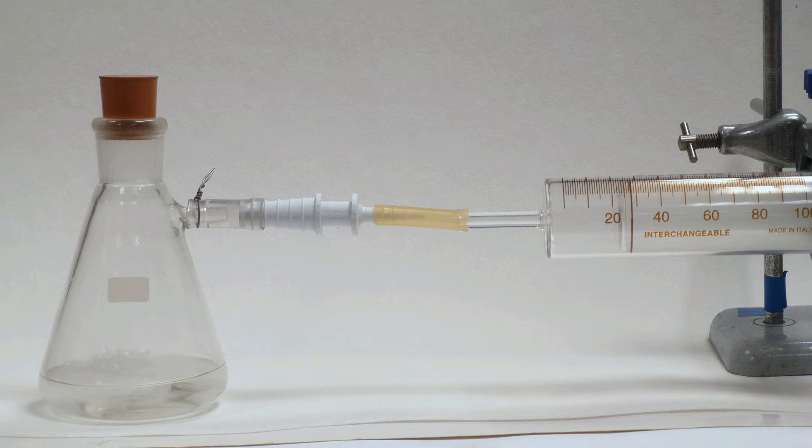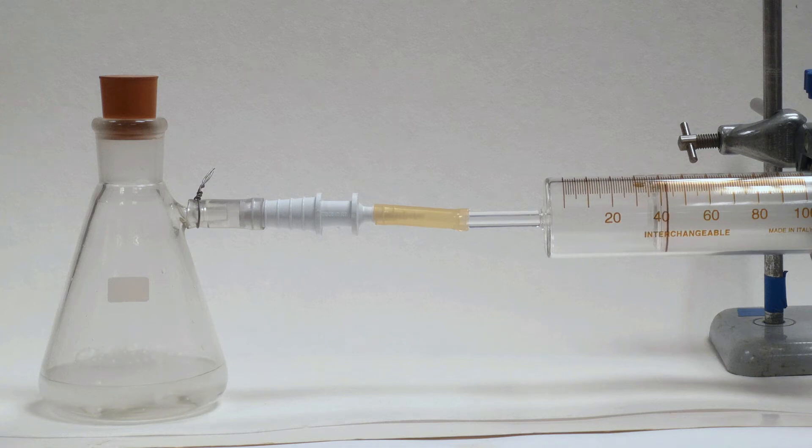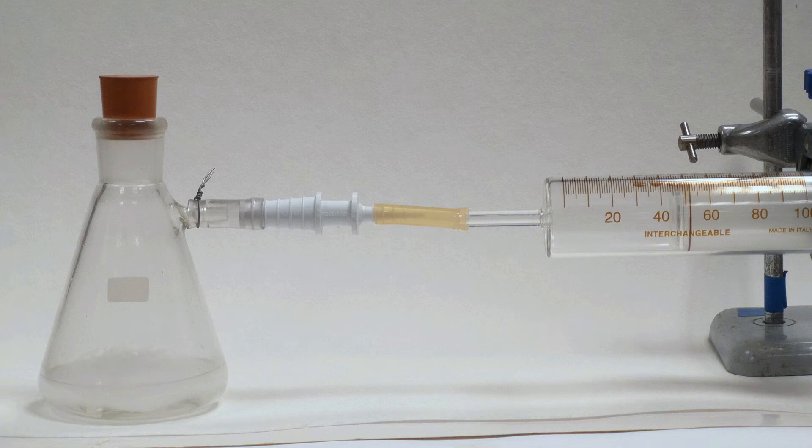Repeating the experiment with 1 molar acid shows, not surprisingly, that the rate of gas production is slower. This time it takes nearly 30 seconds to produce 80 cubic centimetres of hydrogen.